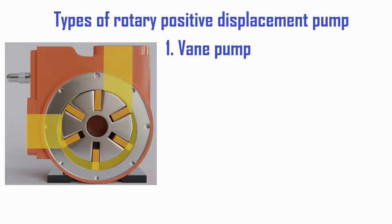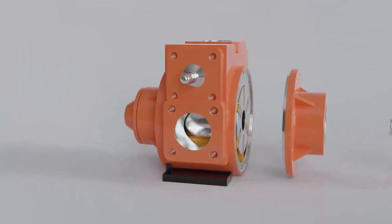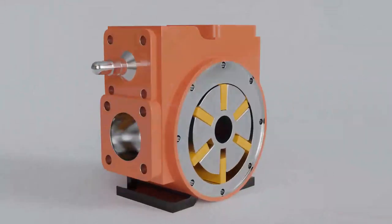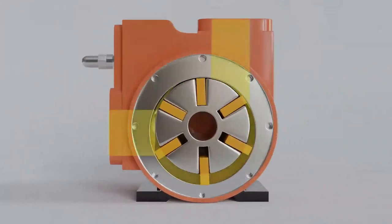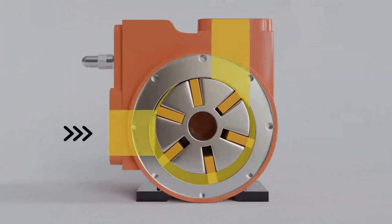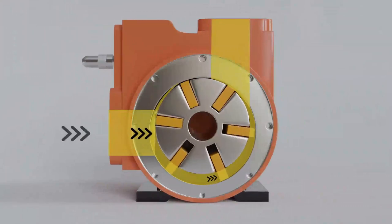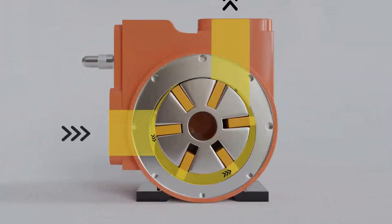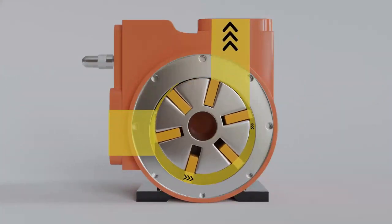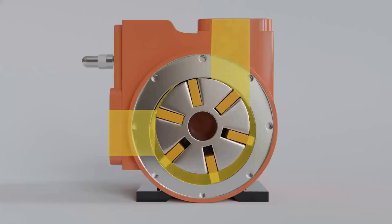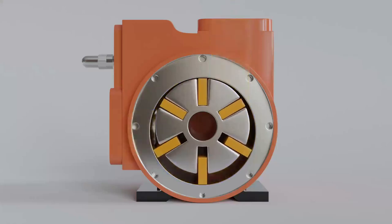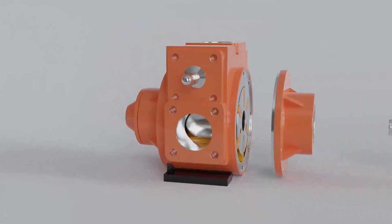The first type is the rotary vane pump. A rotary vane pump is a pump in which the vane in the rotor groove is in contact with the pump casing, and the sucked fluid is pressed from the fluid inlet side to the fluid discharge side while the vanes rotate in the crescent cavity.